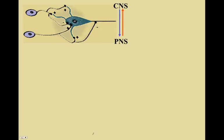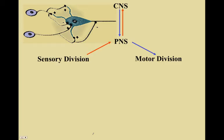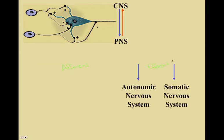We're going to take a look at the central nervous system and the peripheral nervous system. The peripheral nervous system is separated into the sensory division and the motor division. In the sensory division, we have afferent information ascending to the brain, and in the motor division, we have efferent output. The motor division has two divisions: the autonomic nervous system and the somatic nervous system. The autonomic nervous system we don't have conscious control over, and the somatic nervous system we do have conscious control over.